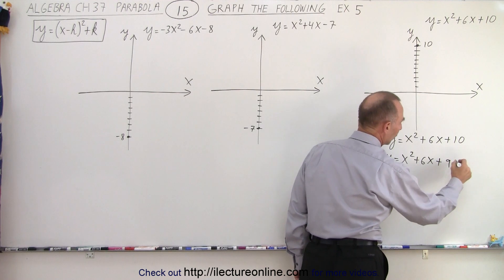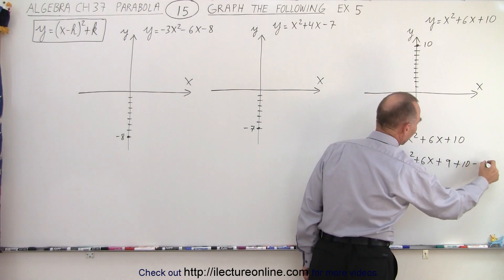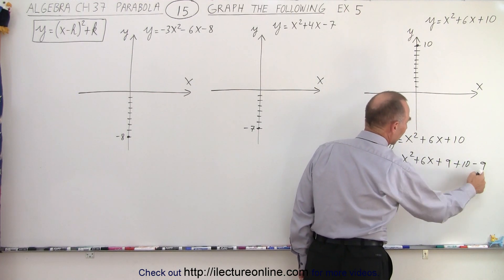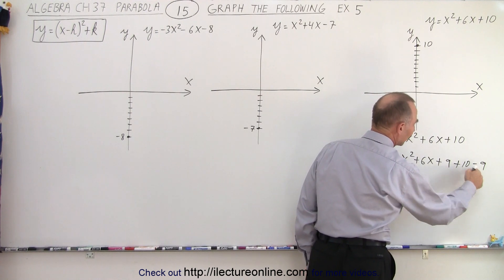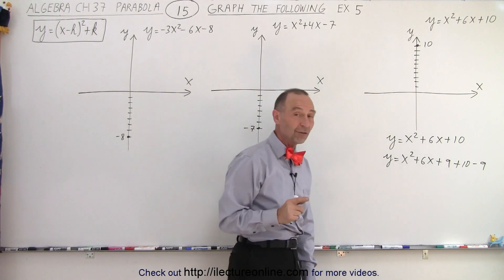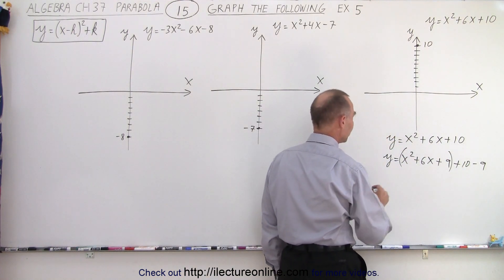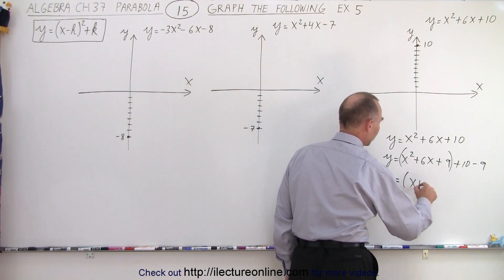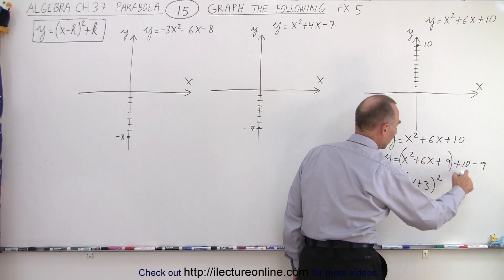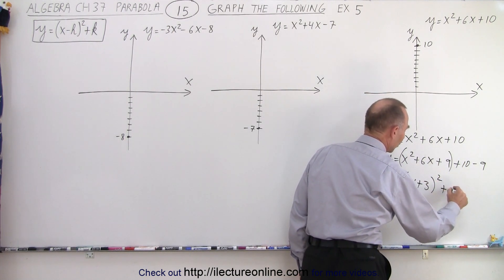Of course since we add a 9 we'll have to subtract a 9 as well. So when we have plus 9 minus 9 that cancels out, we get the original equation back. But now we can group the first three terms together and write this as y equals x plus 3 quantity squared plus 10 minus 9 is plus 1.